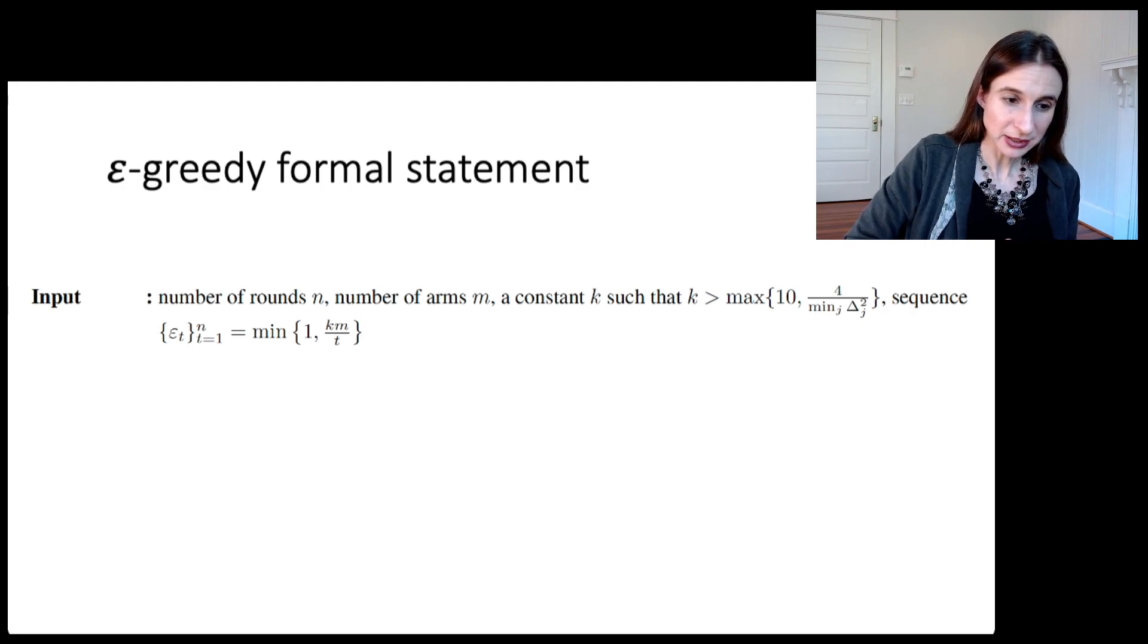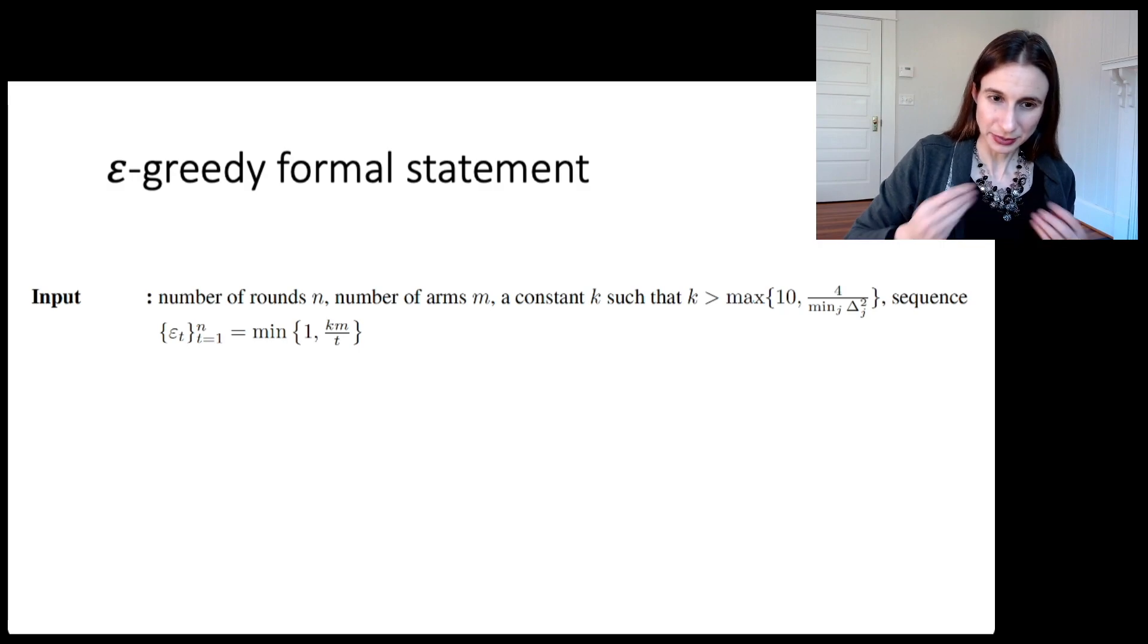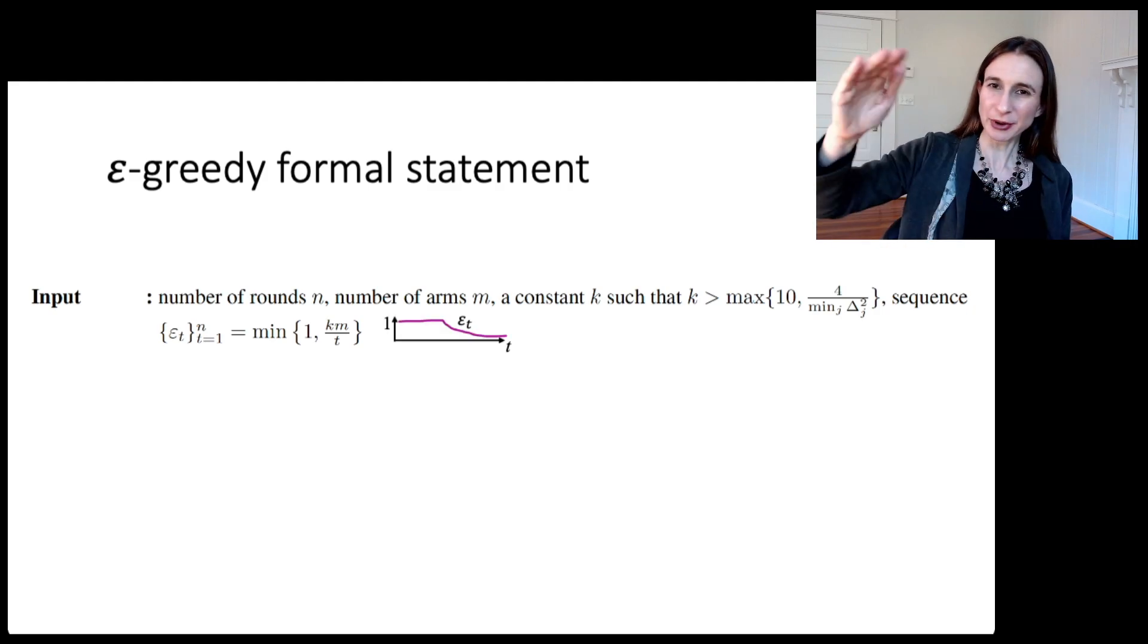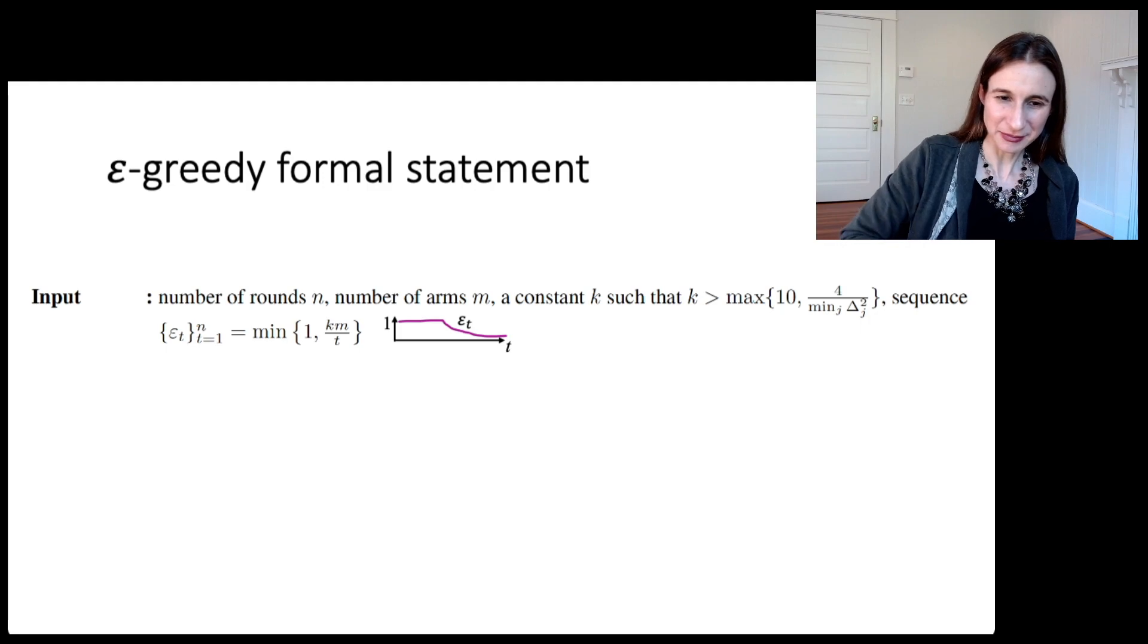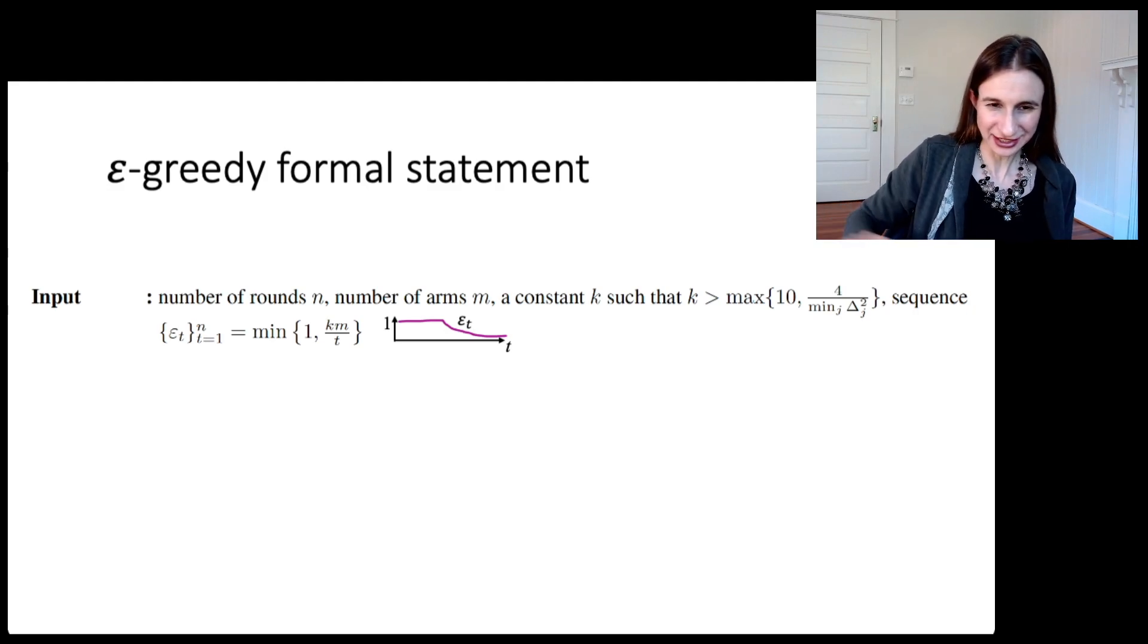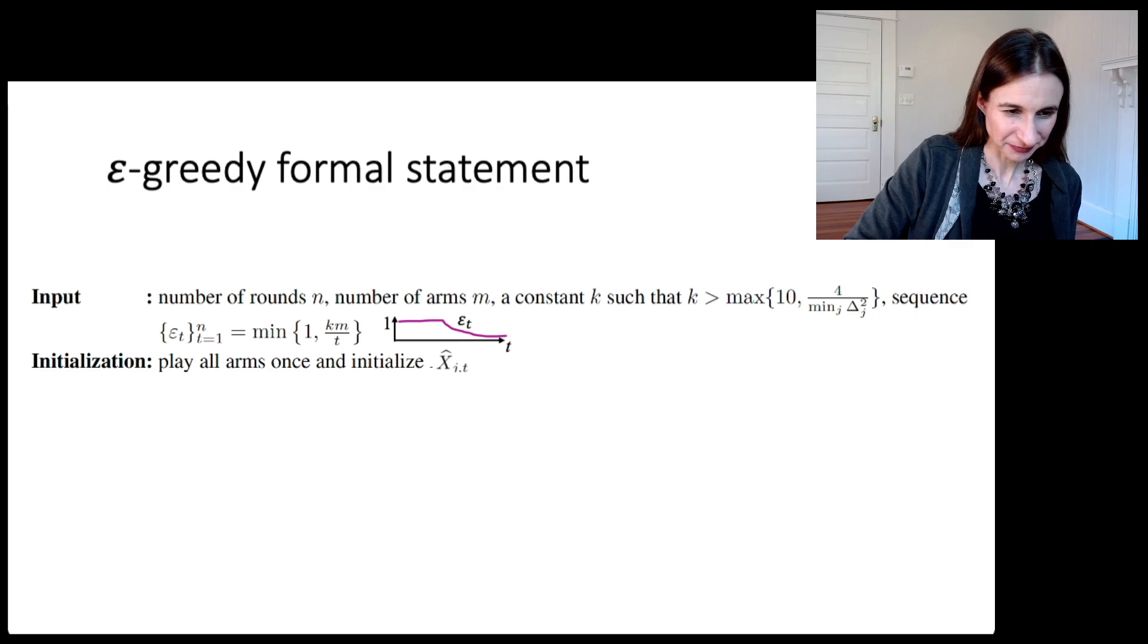So the input is the number of rounds that you're going to play for. The number of arms, a constant K, which is bigger than two quantities, two mysterious looking quantities, and then epsilon. And now you can think about the epsilon as being one for a while and decaying as like one over T, constant over T. So it's one for a while. So you always explore and then you start exploiting. And then at the end, you just exploit, exploit, exploit.